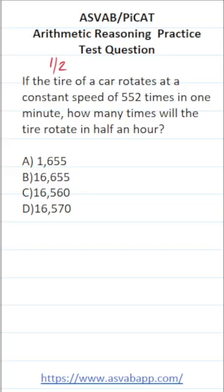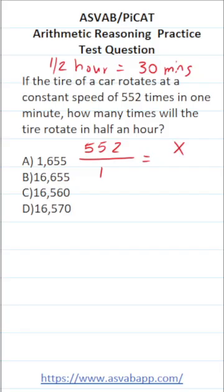To answer this one, you have to first know that half an hour is equal to 30 minutes. Now using a proportion, we can solve the rest of this problem pretty easily. We know the tire rotates 552 times in one minute. That's going to be equal to or proportional to the number of times it rotates, which is unknown, so we'll call that X, that it rotates in half an hour, which is the same thing as 30 minutes.